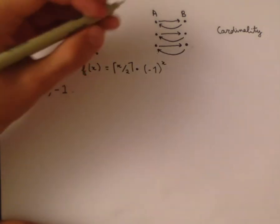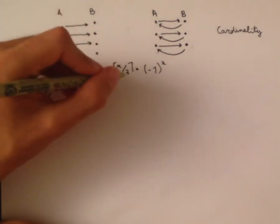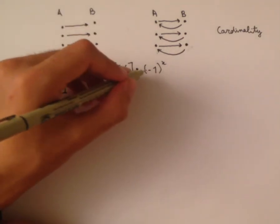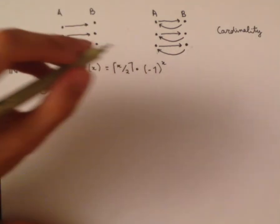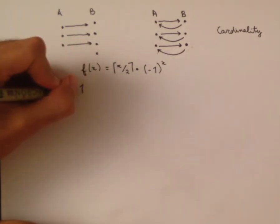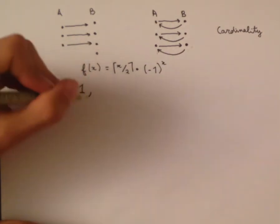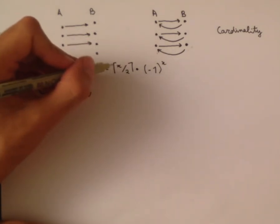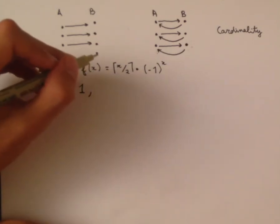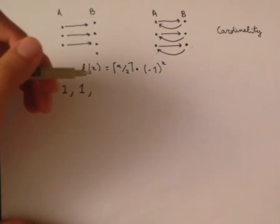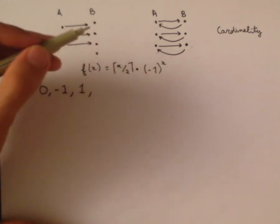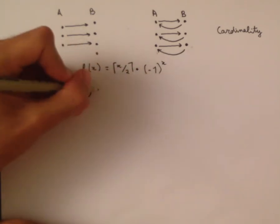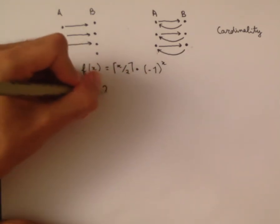f(2) is the ceiling of 2/2, which is the ceiling of 1, which is 1. We multiply that by (−1)^2, which is 1, so 1 × 1 = 1. Then f(3) is the ceiling of 3/2, which is 2. We have an odd exponent, so that gives us −1, and 2 × (−1) = −2.